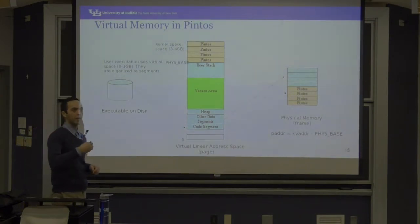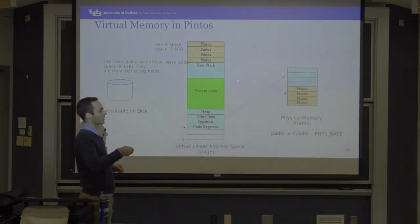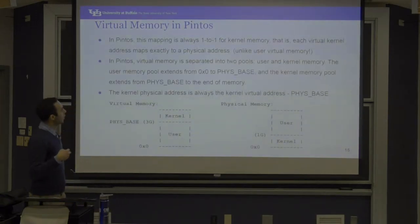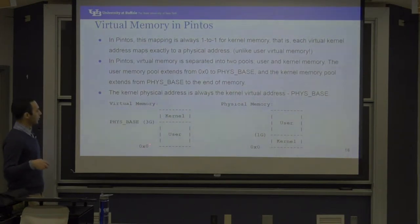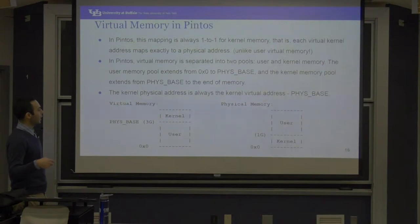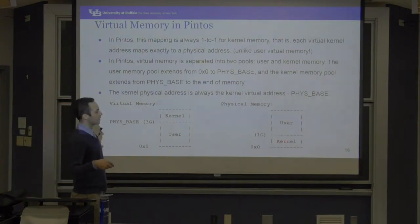The kernel space mapping is one-to-one: the physical address for a kernel page is simply the kernel virtual address minus PHYS_BASE. So the first kernel page maps to the first physical frame — just subtract PHYS_BASE. For user virtual memory addresses, that's not the case — you have to look at the page table to find the mapping. In Pintos, user virtual addresses go up to 3 GB and kernel space is the first 1 GB of the physical address space.